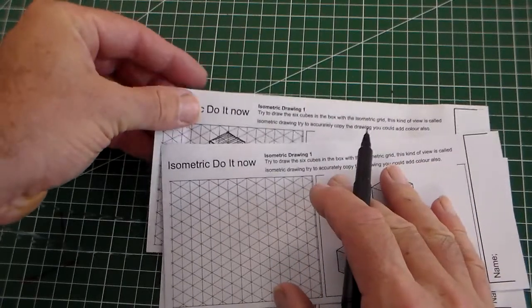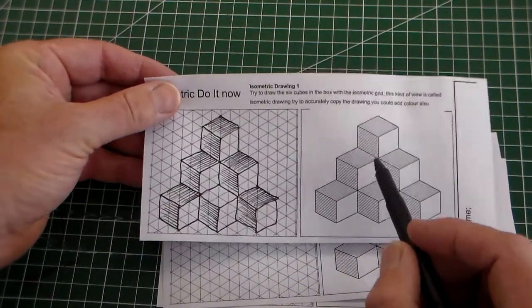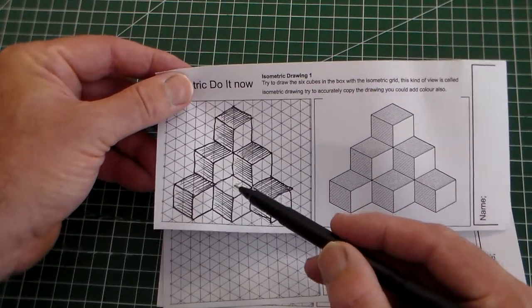So if we look at this, the idea, here's one that I've completed, is to copy this image onto the isometric grid you have.